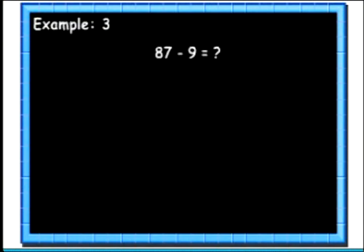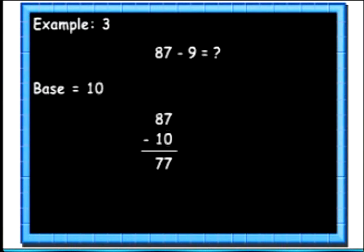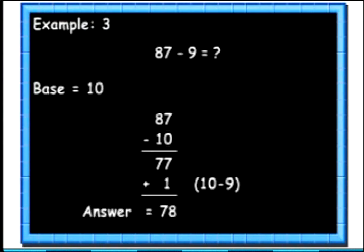Let's see another example. Here we want to know the difference of 87 and 9. Here we will take the base as 10. Instead of subtracting 9 from 87, we will subtract 10. We get 77. Then we will add 10's complement of 9 to the result, which is 1. So we get the answer as 78.